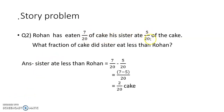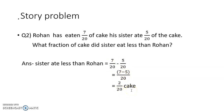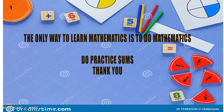Now a story problem: Rohan has eaten 7 out of 20 of a cake. His sister ate 5 upon 20 of the cake. What fraction did the sister eat less than Rohan? Less than means minus. So 7 upon 20 minus 5 upon 20 — denominator remains 20 — and 7 minus 5 is 2 upon 20. The sister ate 2 upon 20 less than Rohan.